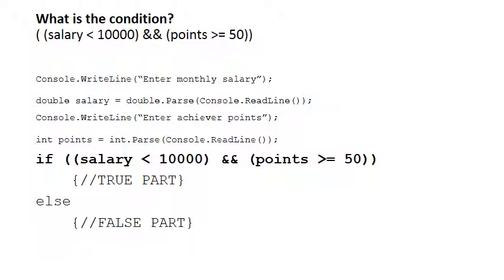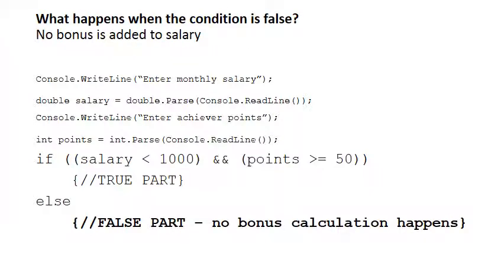Taking each of those questions and implementing them as code: the first question was what is the condition, and that becomes an if statement that says if the salary is less than 10,000 and the points are greater than or equal to 50. We have a complex condition with two simple conditions on both sides of the AND operator. It's very important to notice that you have brackets at the start and end — the whole complex condition must be within brackets. When the condition is false, no bonus is added to the salary, so there's no bonus calculation in the else part of the if statement.